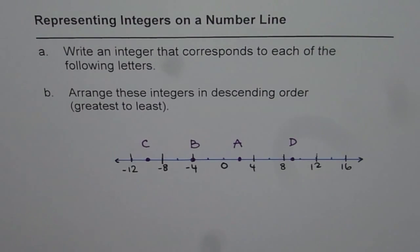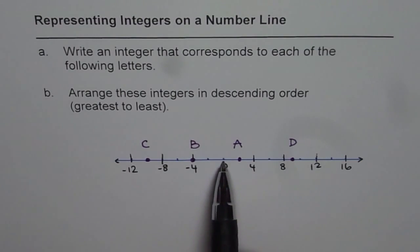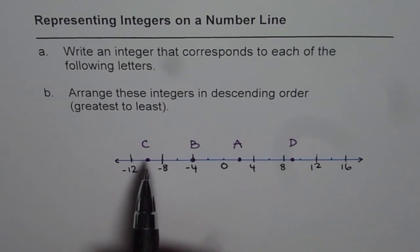But as you know, we can read all the numbers from the number line. Numbers or the integers on the right side of 0 are positive and those on the left are negative. Let us start writing their value.